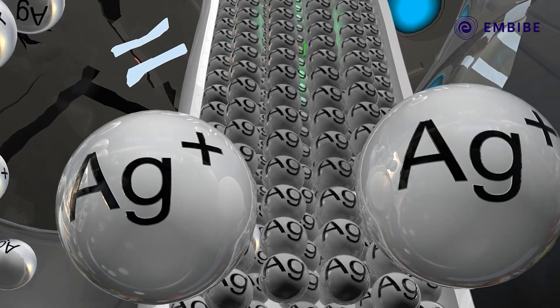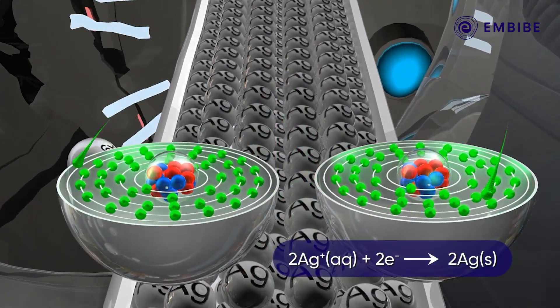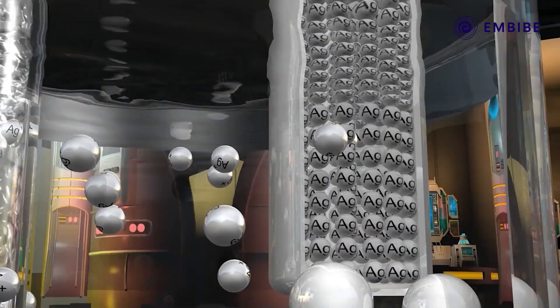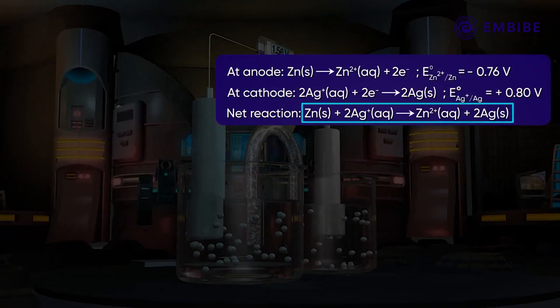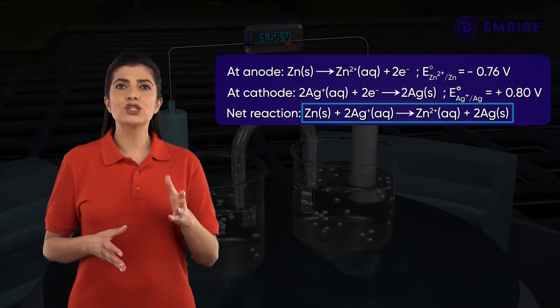Here Ag⁺ ions from the solution migrate to the cathode. Two of the Ag⁺ ions gain electrons coming from the anode and get reduced to give Ag atoms. Therefore, the net reaction in the cell is as shown: Zn solid plus 2Ag⁺ gives Zn²⁺ plus 2Ag solid.